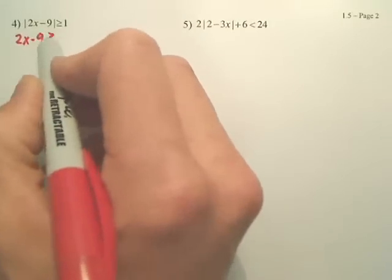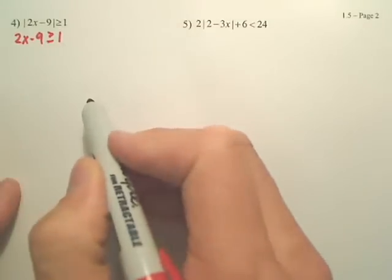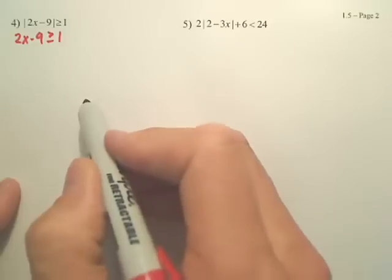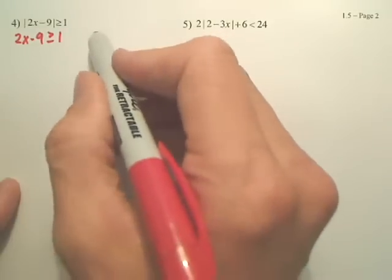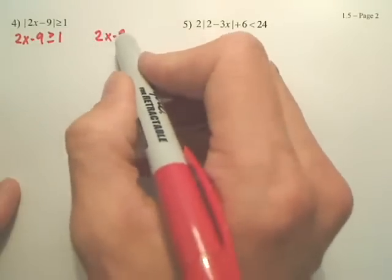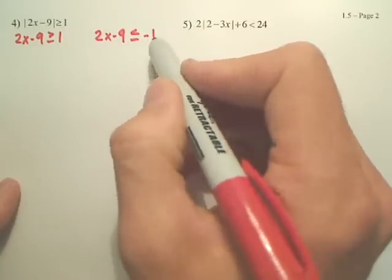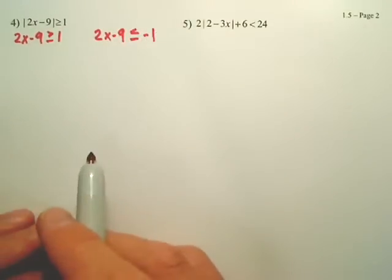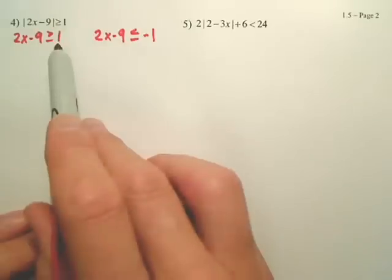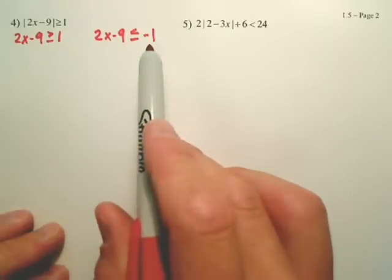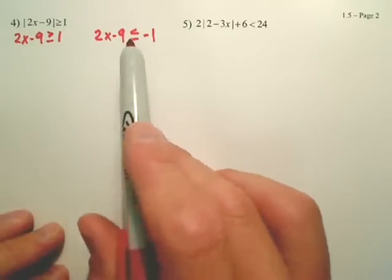You do 2x minus 9 is greater than 1, except the other one is going to be 2x minus 9 is less than or equal to negative 1. So besides just changing the answer to a negative, what else did I do? I flipped the sign.